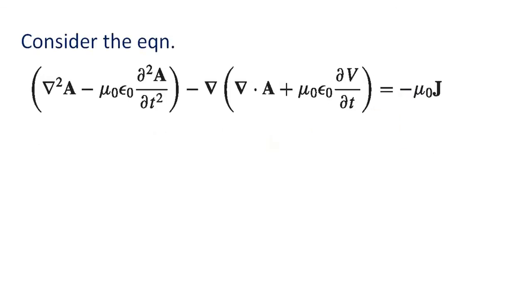Now consider the equation: del square A minus mu 0 epsilon 0 d square A by dt square minus del of del dot A plus mu 0 epsilon 0 dV by dt equal to minus mu 0 J. This we already derived in the previous session.